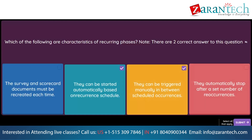Question. After a supplier is registered, which of the following activities can be performed within the registration tile? Option 1: View the registration approval flow. Option 2: Access the supplier request form. Option 3: Update the primary supplier contact. Option 4: Request preferred status.